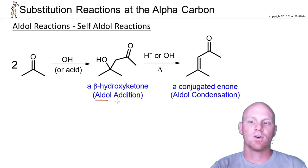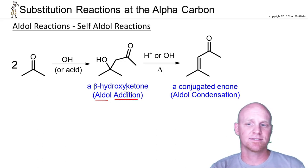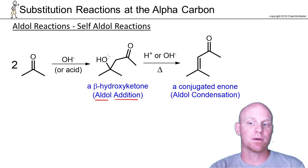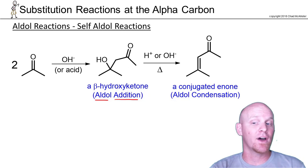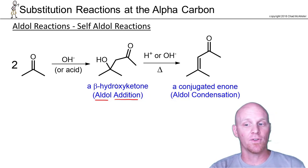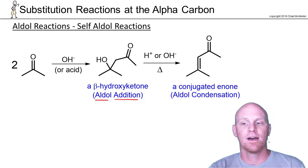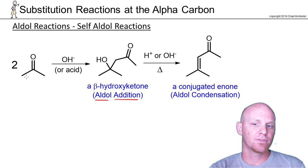Here we can see the aldol addition product — this is actually where the aldol gets its name. Had we started with an aldehyde instead of a ketone, this molecule would have been a beta hydroxy aldehyde rather than a beta hydroxy ketone. It would have been an alcohol and an aldehyde, and that's where aldol gets its name. Technically this one is from a ketone, so this is also a self-aldol.